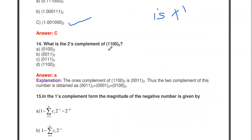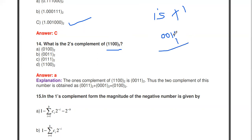What is the two's complement of 1100? First take one's complement: 0s replaced by 1s and 1s replaced by 0s, so 1100 becomes 0011. Then add 1: 0011 + 1 = 0100. So the two's complement of 1100 is 0100.